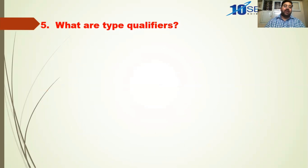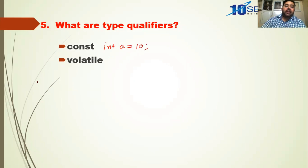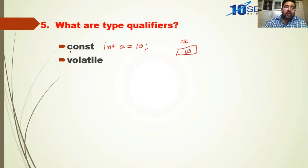Next question: what are type qualifiers? Type qualifiers are: const and volatile. We don't simply use const alone — we use it with a data type. For example, const int a = 10 informs that the value of a will be constant 10 and you cannot change it. So 'a' becomes like a read-only variable — you can only read from it, you cannot modify it.